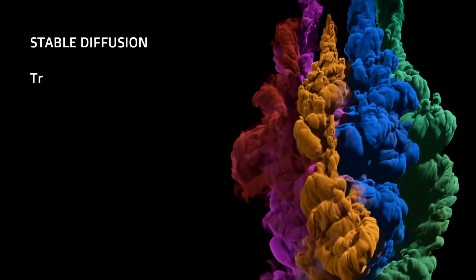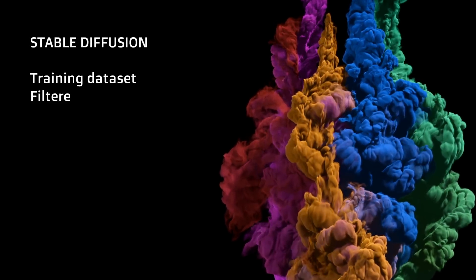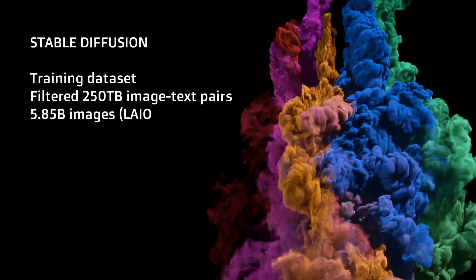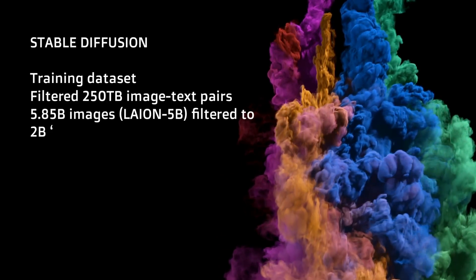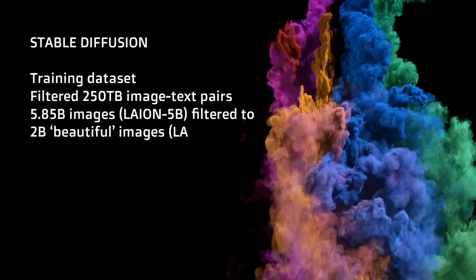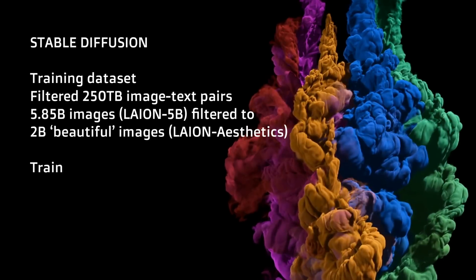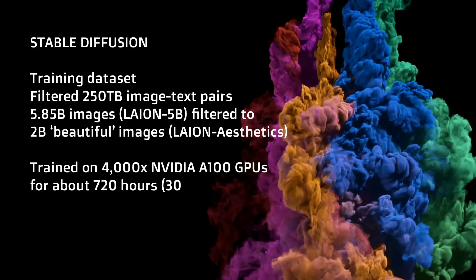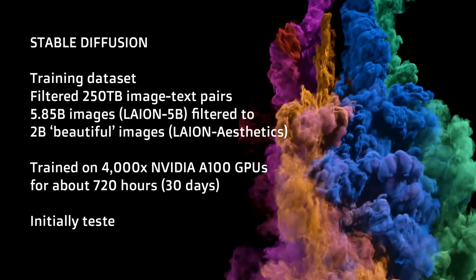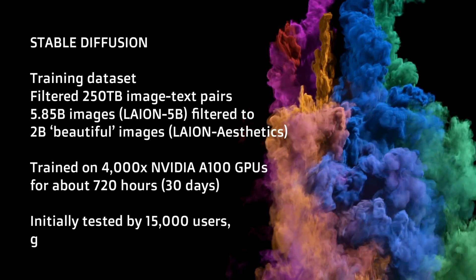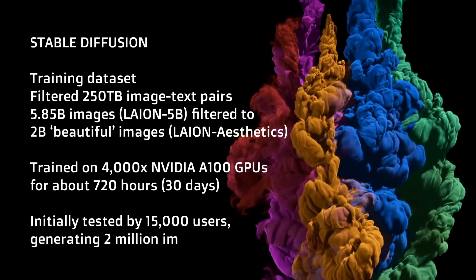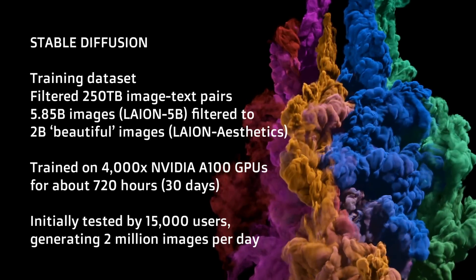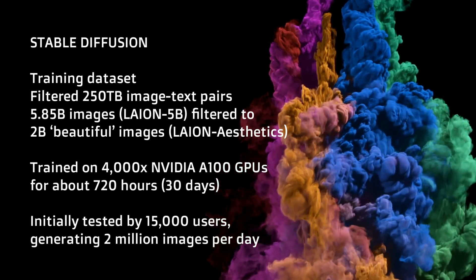Stable Diffusion had a filtered data set from 250 terabytes of image-text pairs — that's 5.85 billion images. They filtered that down to 2 billion beautiful images, called that data set LAION Aesthetics. It was trained on 4,000 NVIDIA A100 GPUs for about 720 hours — 30 days — and was initially tested by 15,000 users who were generating 2 million pictures per day.